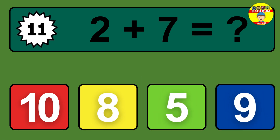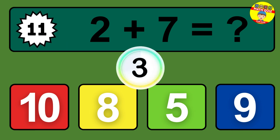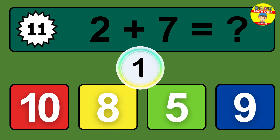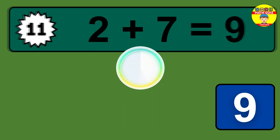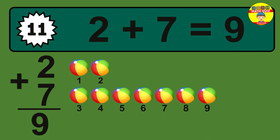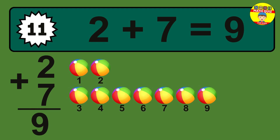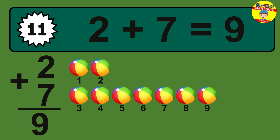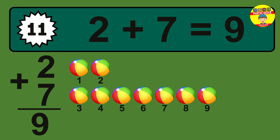Question 11. 2 plus 7 equals what? The answer is 2 plus 7 is 9. Let's count it: 1, 2, 3, 4, 5, 6, 7, 8, 9.